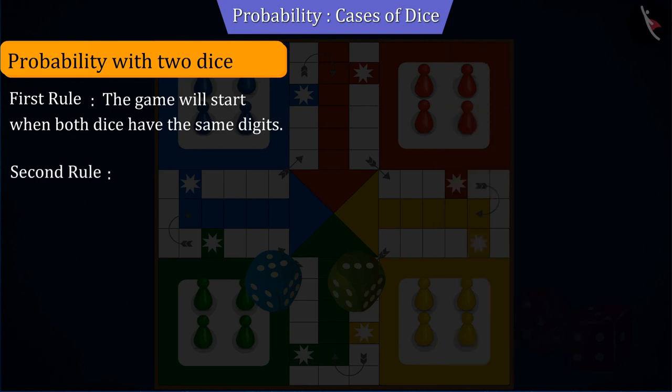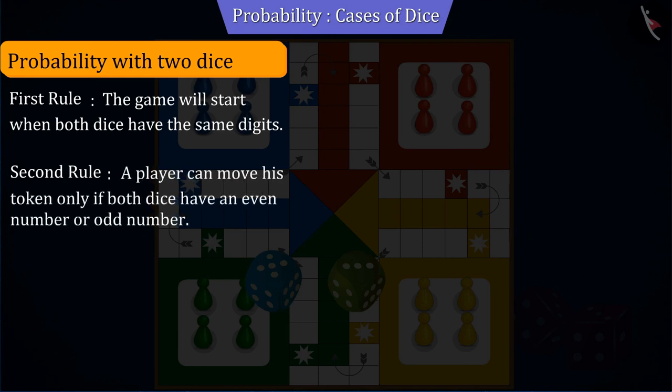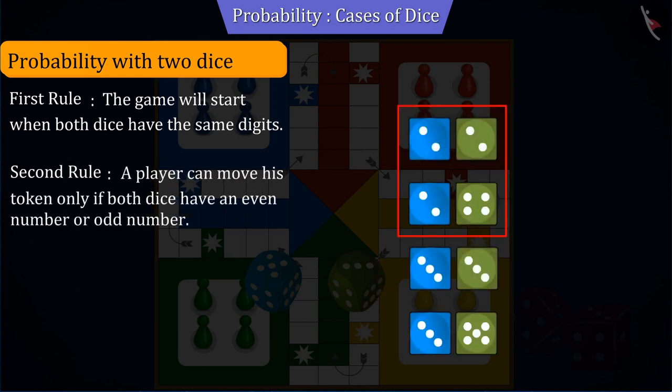The second rule is that the player can move his token only if both dice have an even number or odd number and will move that many places as the sum of those two numbers.